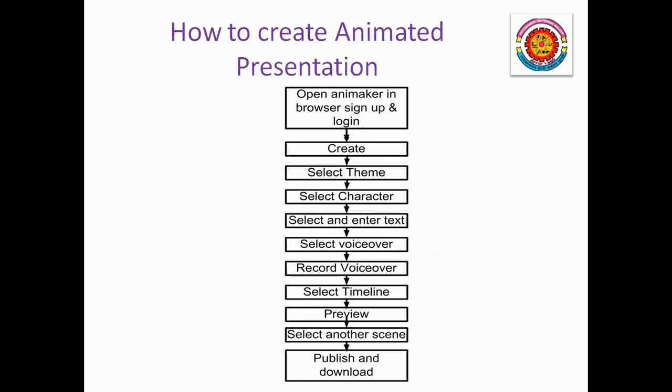This is the flowchart of how to create an animated presentation. Open Animaker in a browser. For the first time, you have to sign up and then login. Then use the create button, select a theme, select a character, select the action of the character, then enter text, select voiceover, then record voiceover, select timeline, then preview the scene. If you want to add another scene, then add another scene; otherwise publish the video and download the video.